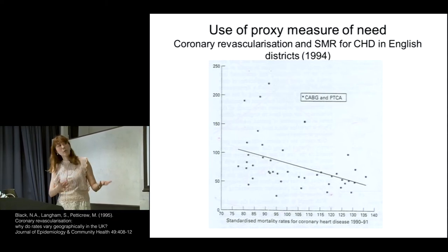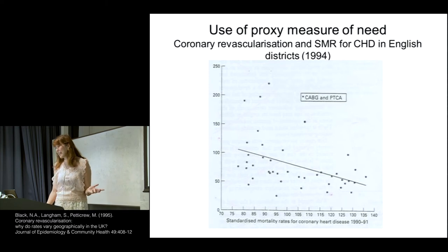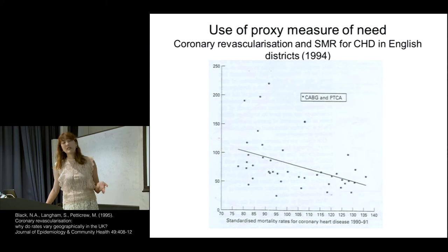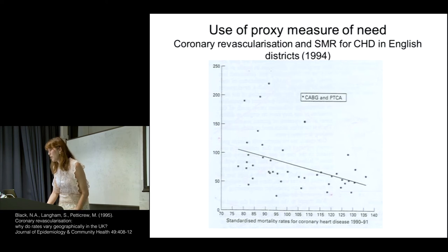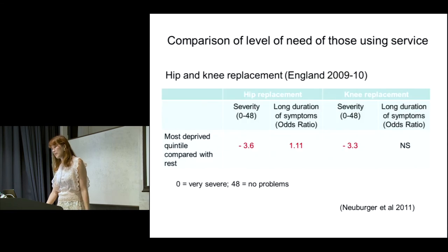So here, use is not reflecting need, even when need is measured approximately. This is in England, and it was surprising when this was found. This is a system supposedly based on equity of process, yet we can see the inverse care law working: those with the lowest level of surgery have the highest level of need.